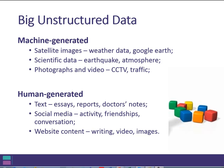Examples of machine generated data include satellite images, weather data, maps and so on, scientific data collected from natural phenomena such as earthquakes or the state of the atmosphere, and photographs and video collected from CCTV or traffic monitors to tell us something about activity in the world.